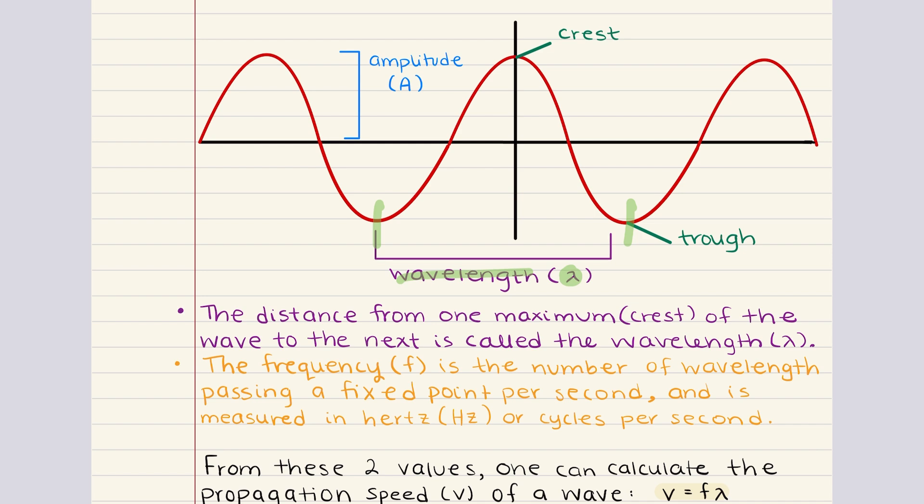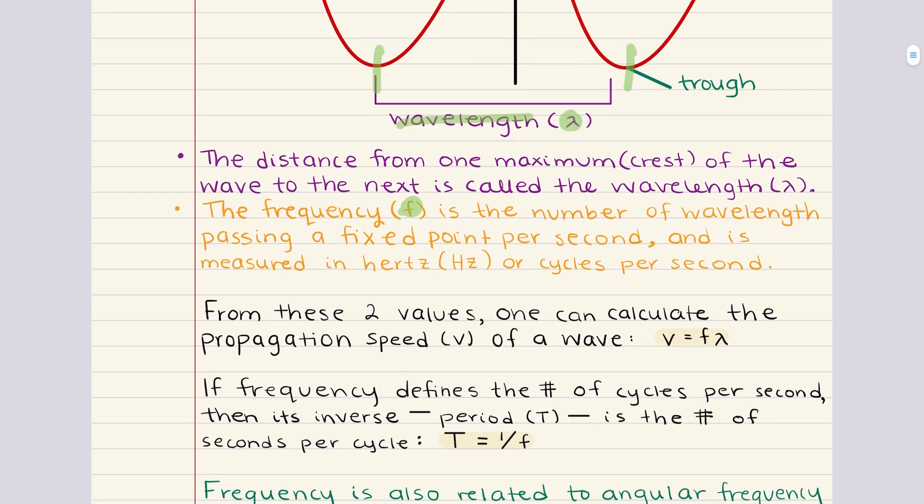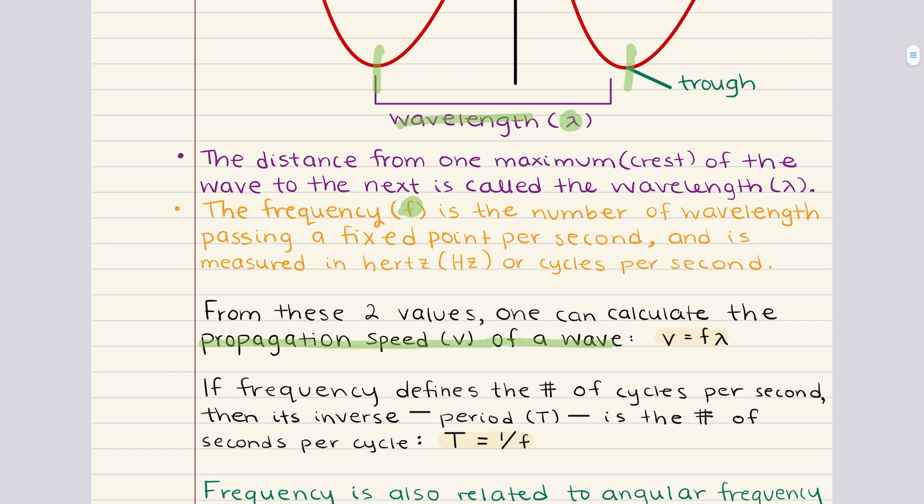Now, the frequency of a wave, denoted as f, measures how many complete wave cycles pass a fixed point in a given amount of time. Frequency is measured in hertz, where one hertz is equal to one cycle per second. Now, from these two values, we can calculate the propagation speed of a wave. The propagation speed of a wave is equal to frequency multiplied by wavelength. Now, to elaborate on frequency a little bit, if we have 10 cycles of a wave that pass by every second, the frequency is going to be equal to 10 hertz.